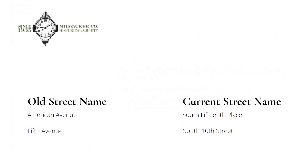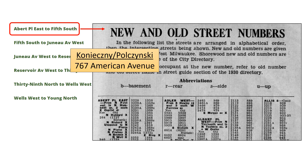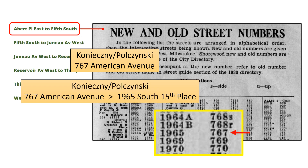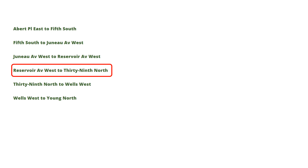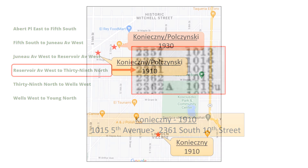With that problem solved, let's see where these folks lived in 1910. We already know that we need to deal with the address change issue for Milwaukee. Here are the street name changes from the Milwaukee County Historical Society website. On the 40-page document we saw before, scrolling down with our newfound skills at searching these records, we find that 767 American Avenue is now 1965 South 15th Place. Switching to another address change document, we find that 1015 South Avenue is now 2361 South 10th Street.